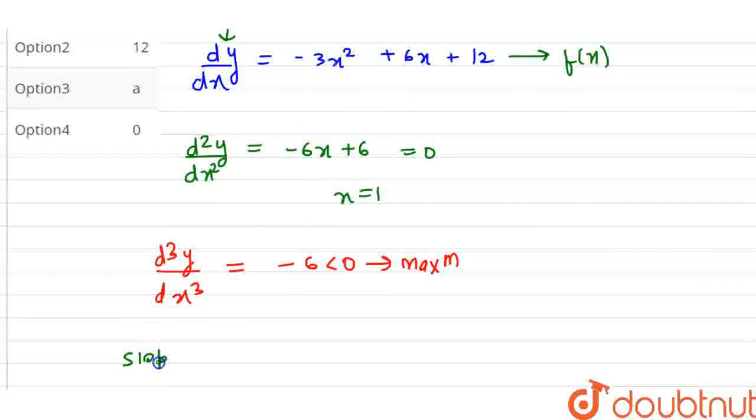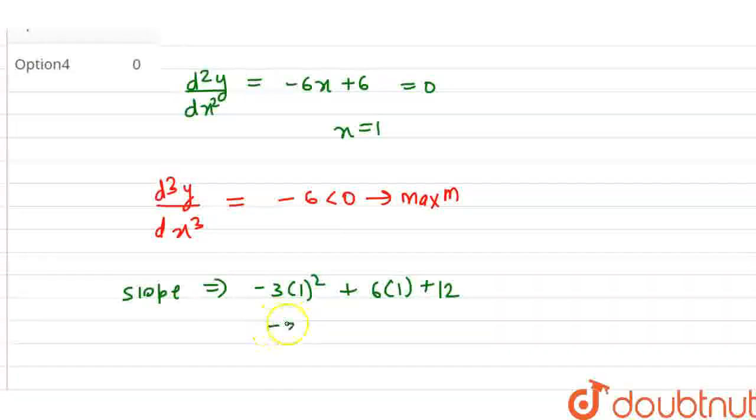Then we can say that the slope, which is maximum slope, minus 3 into 1 square at x equals to 1, plus 6 into 1, plus 12. So this is minus 3, plus 6, plus 12. So minus 3 plus 6 is 3, 3 plus 12 is 15.